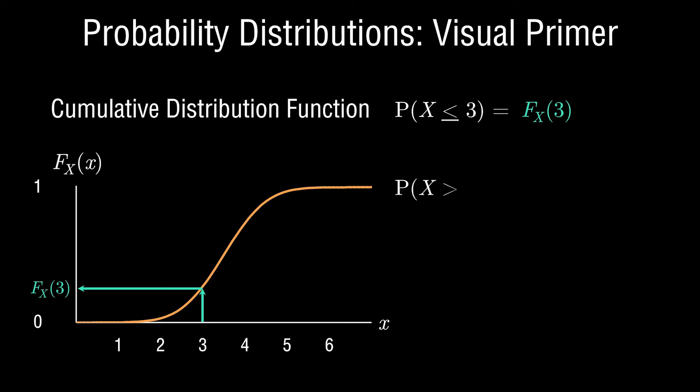If instead somebody asks for the probability that x is greater than 3, you can also answer that directly from the cumulative distribution function. Since the cumulative distribution is the summation of all probabilities less than or equal to an outcome, and the total probability must be 100%, the probability of the random variable exceeding outcome 3 is simply 1 minus the cumulative distribution function value associated with 3. Through the CDF, you can find the probability that x is less than or equal to an outcome, or that it exceeds an outcome.